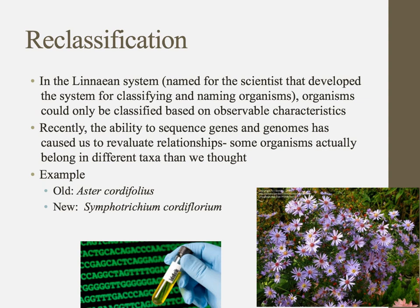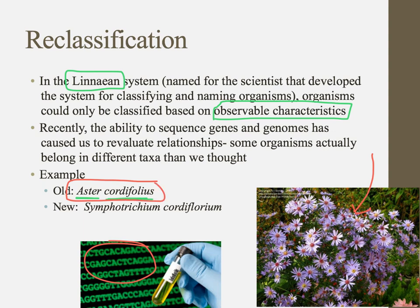This system of placing things into kingdom, phylum, class, order, family, genus, species is called the Linnaean system, named after the scientist who developed it. Originally it was based on just observable characteristics — two organisms might be placed in the same genus because they look alike and have similar behaviors. But recently, DNA and amino acid sequence analysis has shown that in many cases we were wrong: two organisms might have looked the same but from a DNA perspective are not closely related.